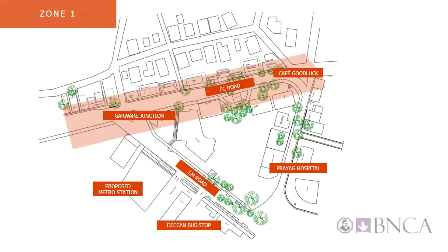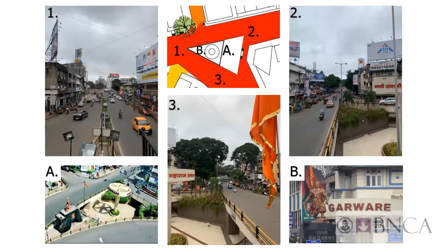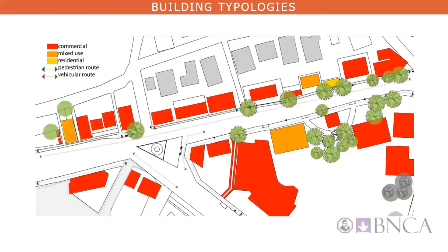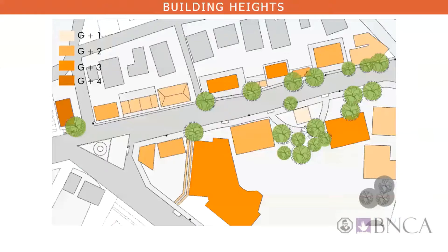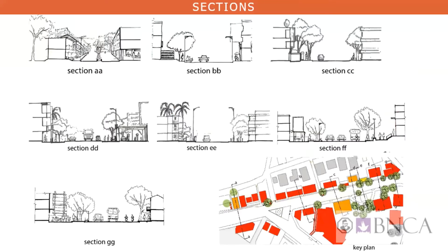The highlighted portion depicts the stretch of our zone, where on the left side is the India Post and on the top right corner is Cafe Goodluck, which is one of the most famous cafes in Pune city. Garwari Underpass is an example of good infrastructure, as it helps reduce traffic to a greater extent. This is a map depicting the building typologies present in our area and street elevations to depict the typical character this area has. Even though this is a commercial area, the maximum height can be seen as ground plus four structure. Some of the sketches were done by initial observations.